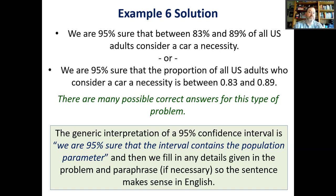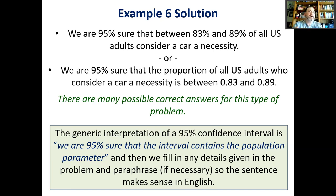While doing homework, try writing these in-context answers different ways to get the hang of it — it takes practice. The generic interpretation of a 95% confidence interval is: 'we are 95% sure that the interval contains the population parameter,' then fill in any details from the problem and paraphrase so it makes sense in English. If on a test you write down nonsense you'll get zero points — you must mention the population, mention the proportion or percentage, and talk about how confident you are.